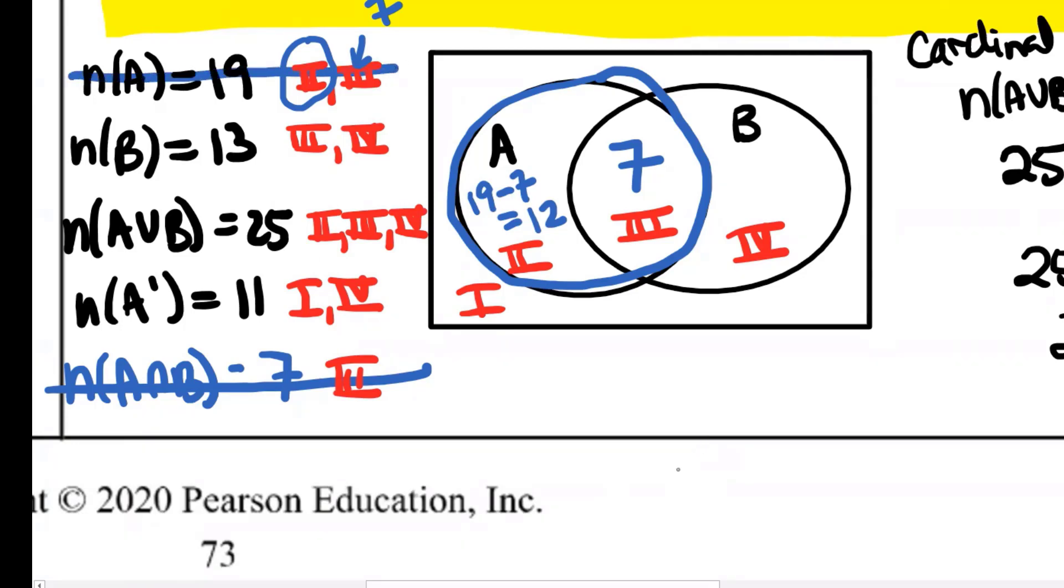Now let's look at set B that has 13 in it. How does that help us? Which region can we figure out based on the fact that set B has region four? That's right. Region Roman numeral four.